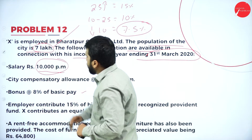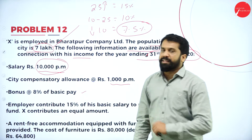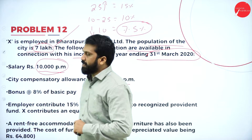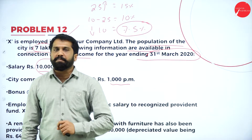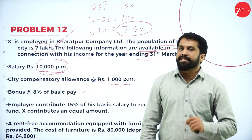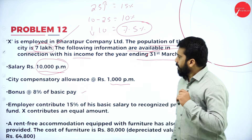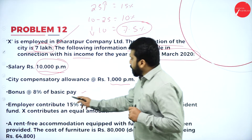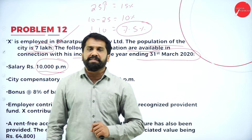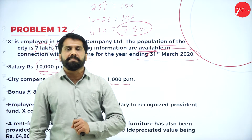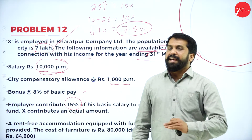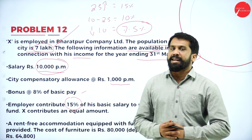Whatever basic salary we have — 10,000 per month — 8% on that is your bonus, which comes to 800. Then, employer contribution is 15% of basic salary. Up to 12% it is exempted; excess over 12% is called taxable. So out of 15%, minus 12%, the balance 3% is taxable.